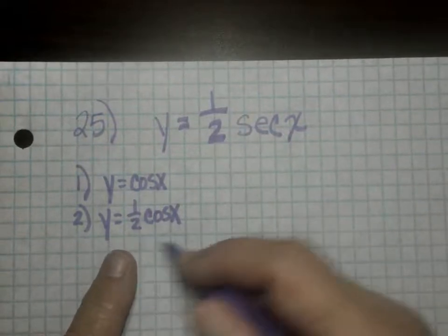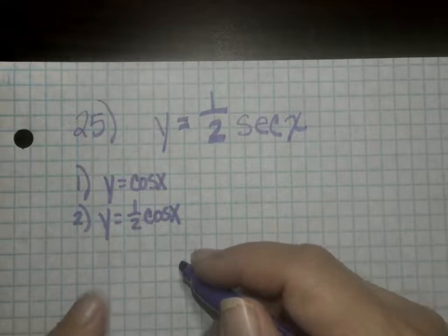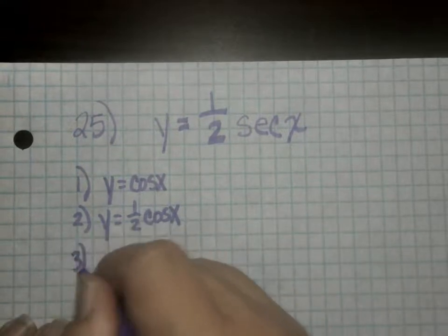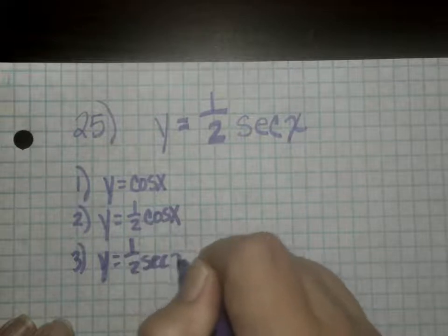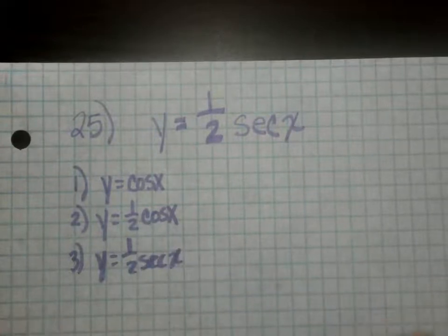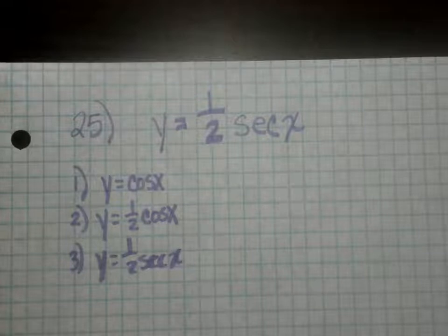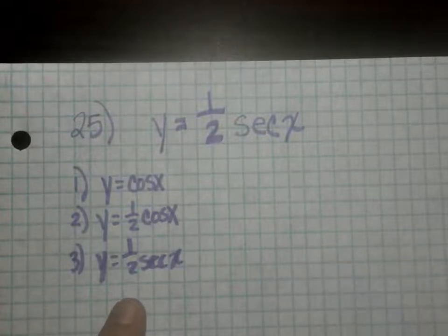So once you graph your cosine, then you come in here and you graph your one half secant x, because your cosine builds your frame for secant x. Once you've got the cosine, then you can just go in and make the u shapes. Does that make sense? And this guy is going to have a vertical compression.